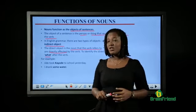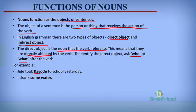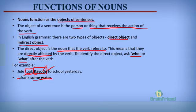Let's look at some examples. Jide took Kayode to school yesterday — ask who or what did Jide take to school. Kayode is the direct object of the verb took, and it's a noun. I drank some water — I is the subject, drank is the verb. What did I drink? Some water. So by asking what or who the verb refers to, you can easily identify the direct object.